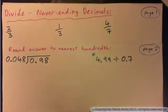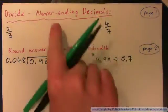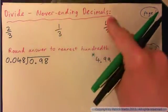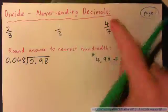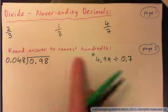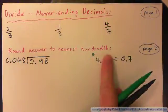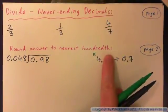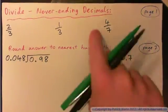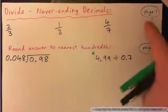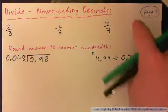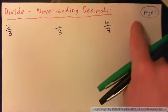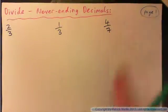In this video we are going to divide never-ending decimals and round our answers to the nearest hundredth. We will just do page 1 and page 2. Let's start with page 1.